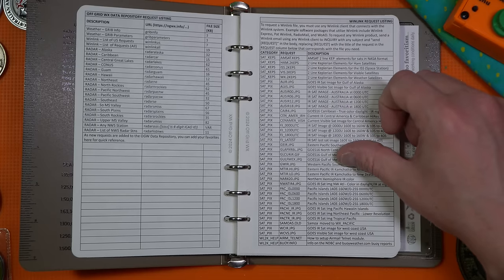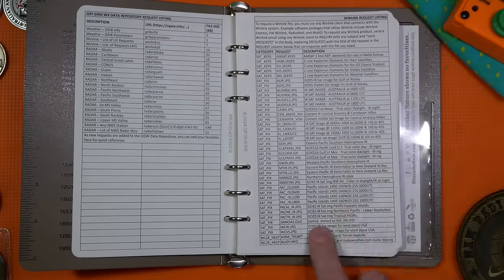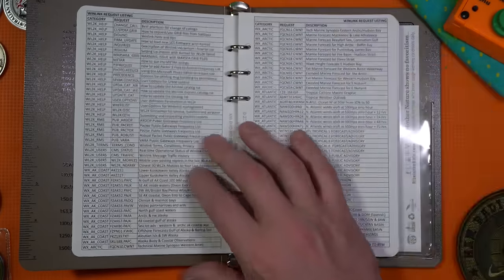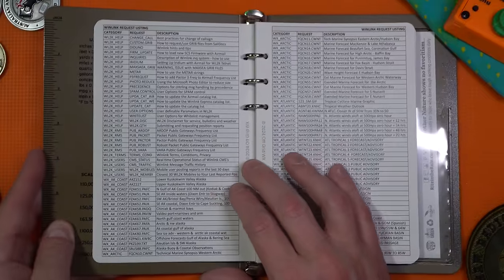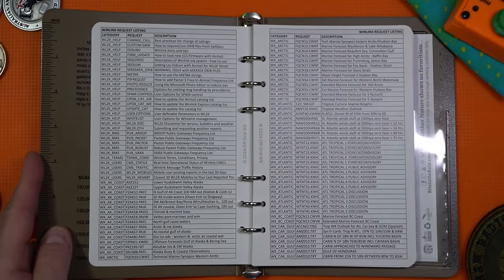You can get the Gulf of Mexico, the Pacific Islands. You can get GOES, IR sat information, Samoa. Like, there's a ton of these reference pieces in here that I didn't even really know about. This is pretty insane what you can get information for.